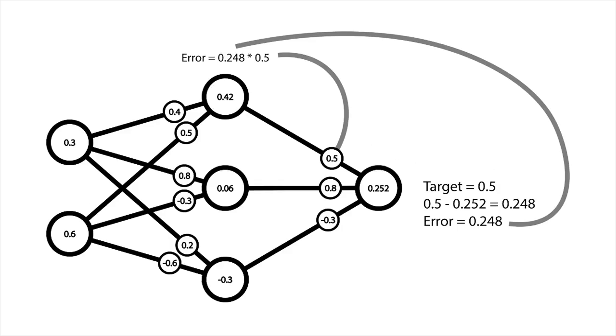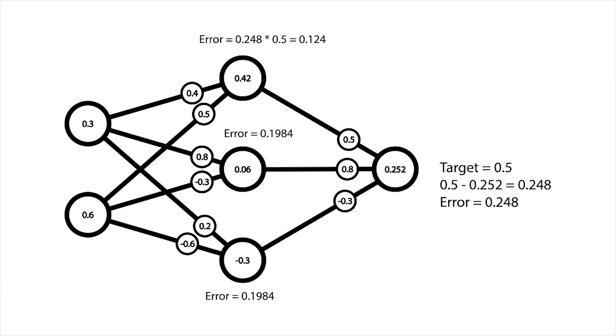You then work out the error of the next layer by multiplying the error we calculated by the weight connecting the neurons, and repeat that with the other neurons.